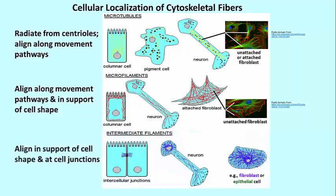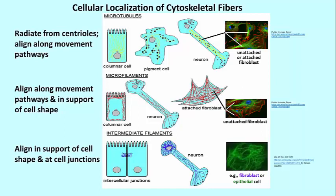Intermediate filaments are often associated with cell junctions, making the junctions very tight and firm — for example, in spot desmosomes or belt desmosomes. Intermediate filaments therefore have a function in strengthening cell attachments. They are also found throughout a neuron and along the long axis of the axon, conferring stability to this long extended shape.